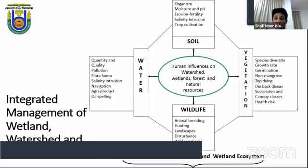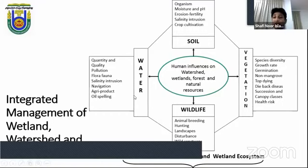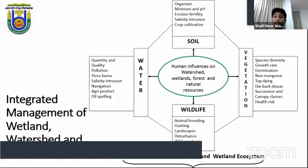I propose an integrated management model for wetlands, watershed and forest. The main factors of natural resources are soil, water, vegetation and wildlife. If we can protect our soil, our vegetation, our wildlife and our water resources — whether wetlands, river systems or watersheds — then as a whole, integrated management is possible, and natural resource management becomes achievable when we protect these four sectors of nature.